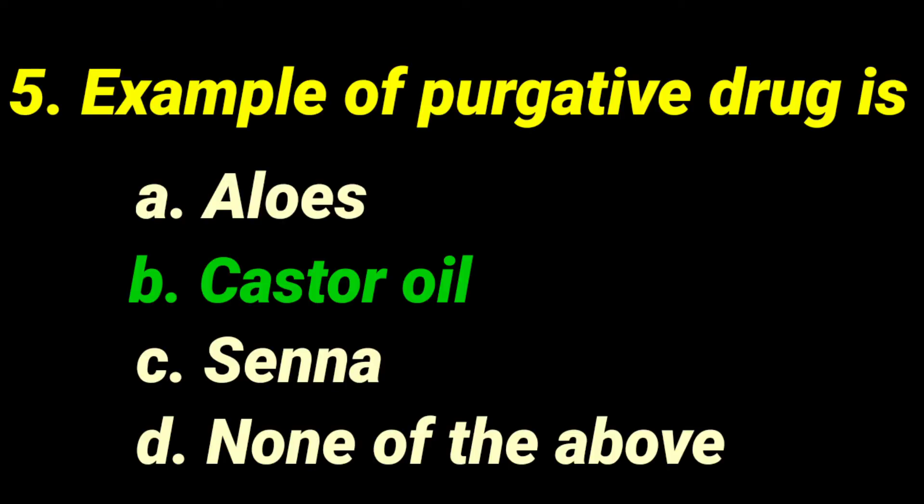Question number five: example of a purgative drug. Aloe has laxative property only. Castor oil in small doses is used as a laxative, but it is usually used as a purgative. Senna will also be used as a laxative only. The correct answer is castor oil — it is used as a purgative. A purgative is an agent that increases or stimulates the frequency of bowel evacuation, used for the treatment of constipation but taken in somewhat large doses. Castor oil is a fixed oil obtained from Ricinus communis belonging to the Euphorbiaceae family, and for this reason it is used as a purgative.